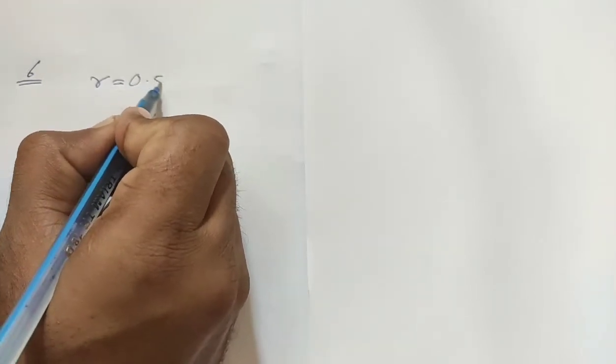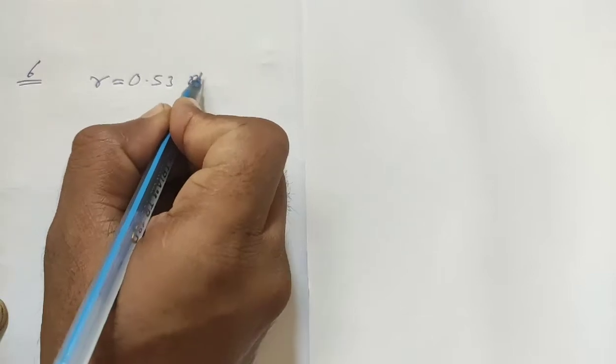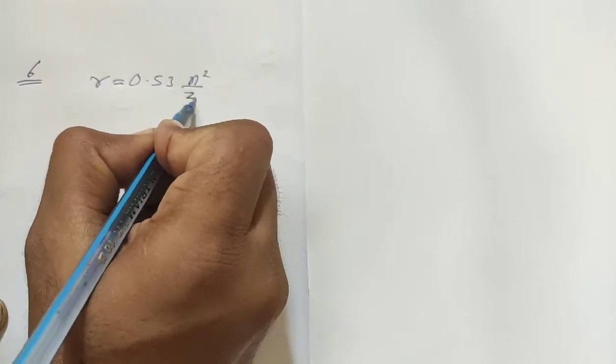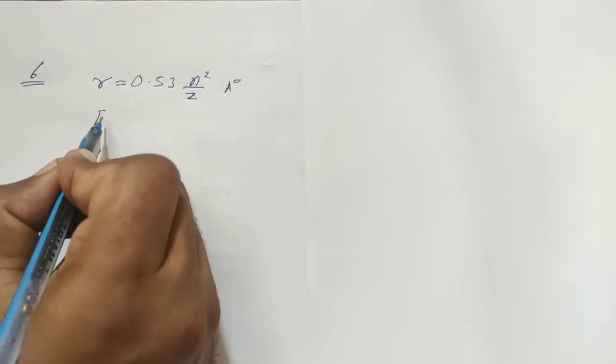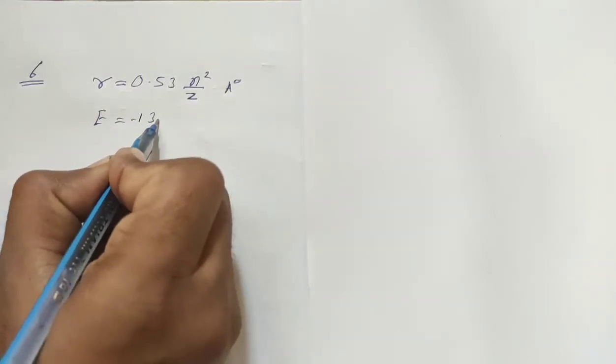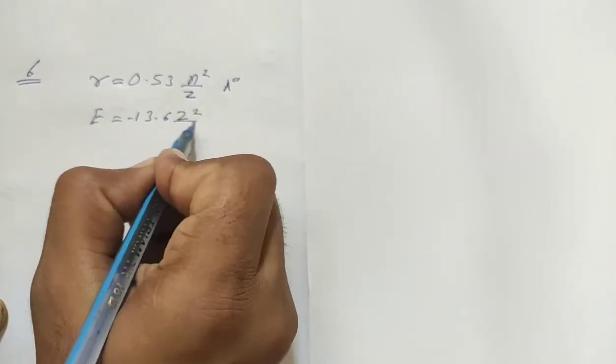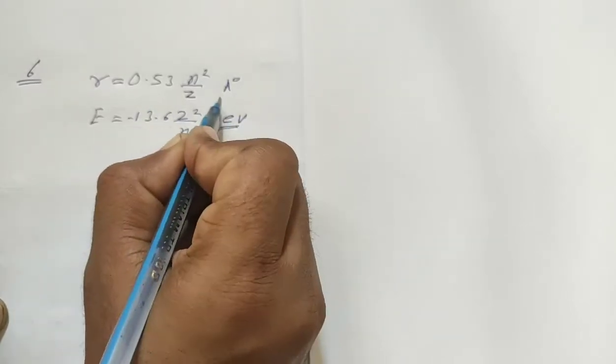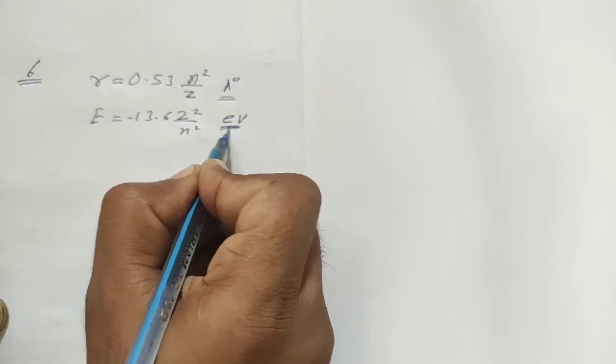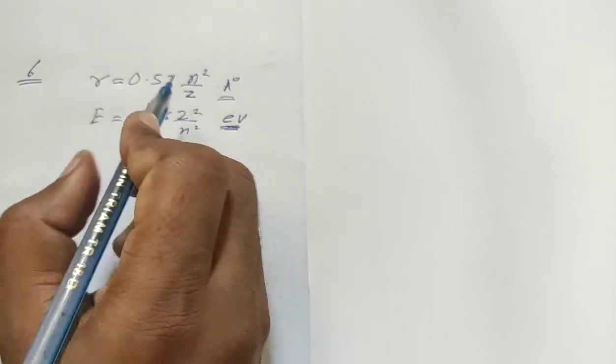Radius is equal to 0.53 n squared upon z, and the answer will be in angstrom. Next, energy formula is minus 13.6 z squared upon n squared, and this is in electron volts. Radius will be in angstrom and energy will be in electron volt. This formula should be remembered.